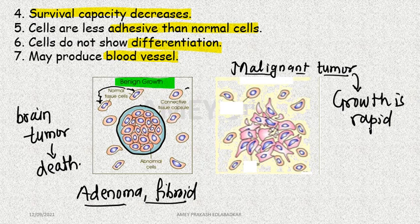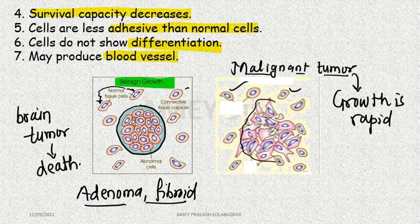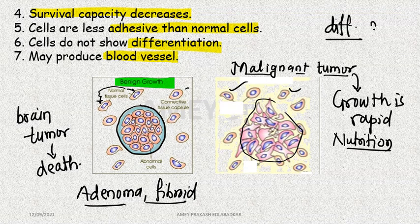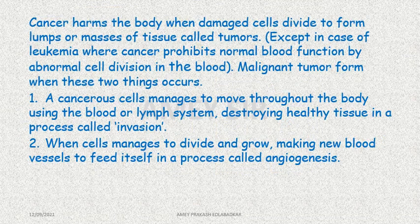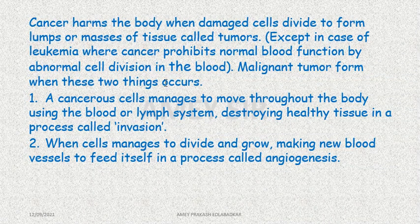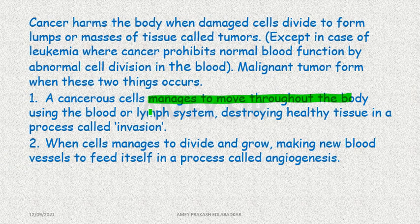Cancerous cells compete with normal cells for nutritive material. Cancer harms when damaged cells divide from lumps or masses (tissue), and then cancerous cells manage to move throughout the body using the blood or lymph system, destroying healthy tissue — this is invasion.